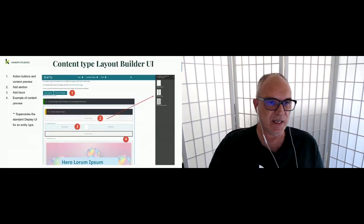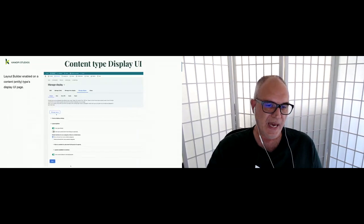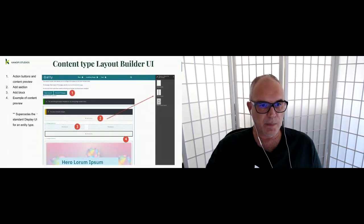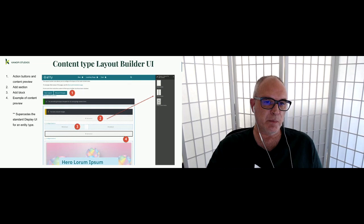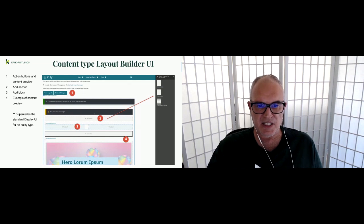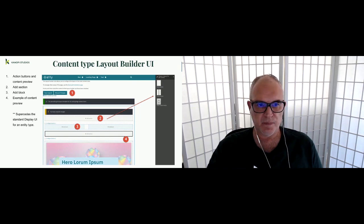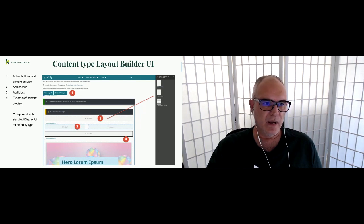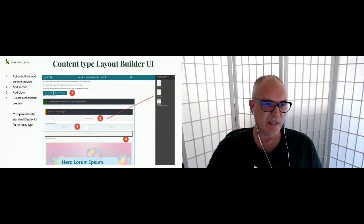Once you click the Manage Layout button, you come to the screen where you can do all kinds of things. You have your action buttons, a content preview, and you can add a section — one column, two column, two column bricks. You can also have other layouts. Once you have a section, you can add a block. This has an example of the content preview right in Layout Builder.